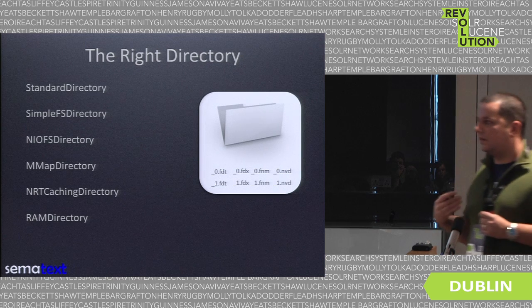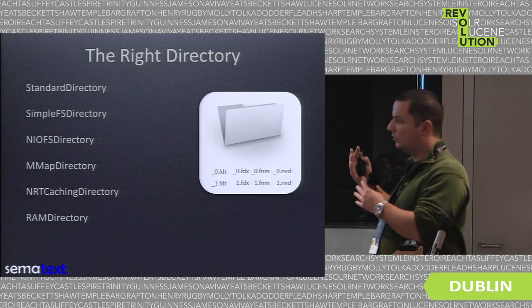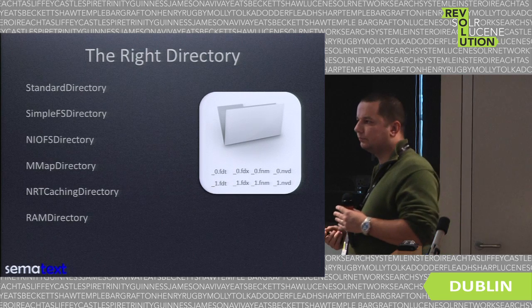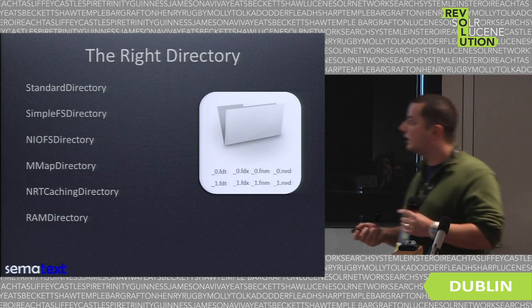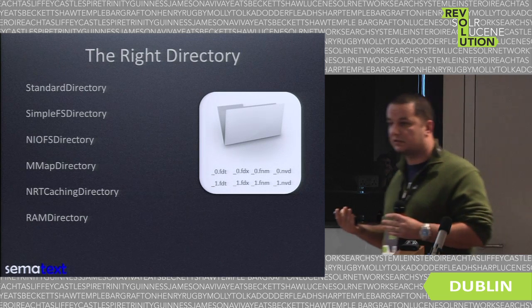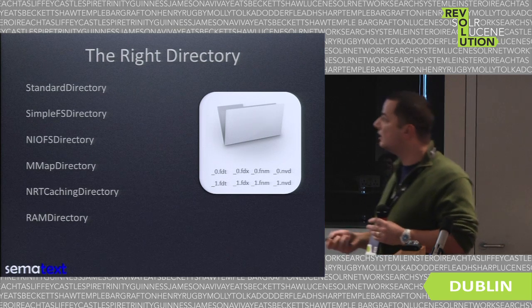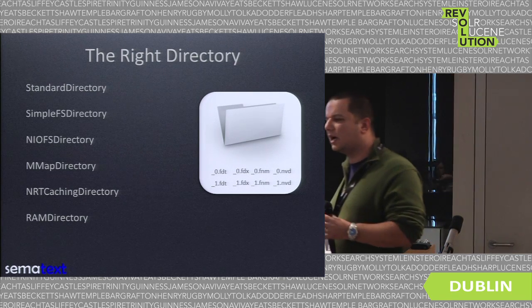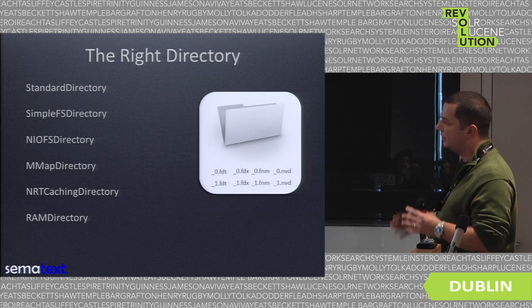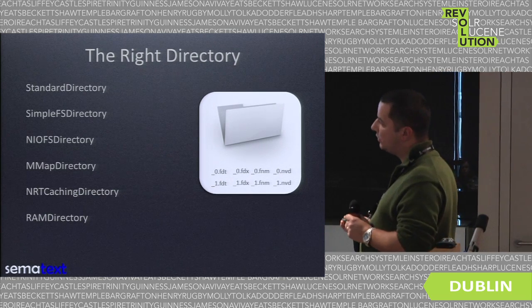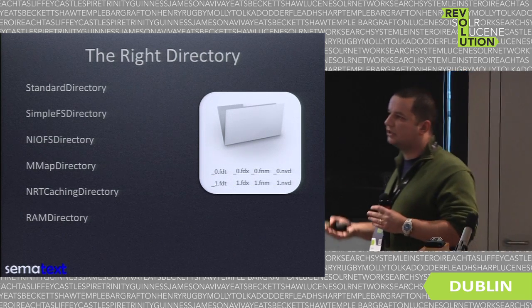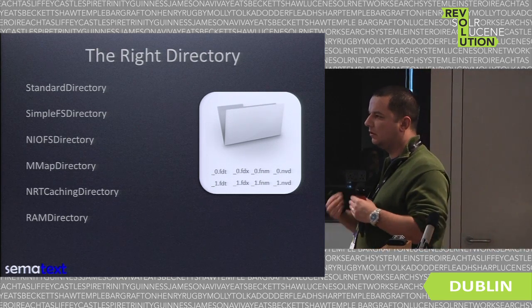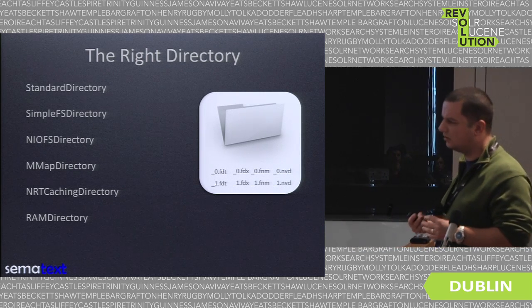One very important thing is choosing the right directory. The Lucene directory is an abstraction layer for Lucene and Solr to read and write indices. We have a few options worth knowing. The standard directory is good for local development or standard usage — not high indexing, not too much querying. The SimpleFSDirectory is good for single-threaded access; it uses Java random access files, but performance will degrade with multiple threads.